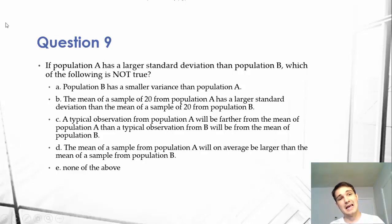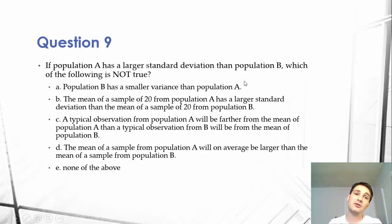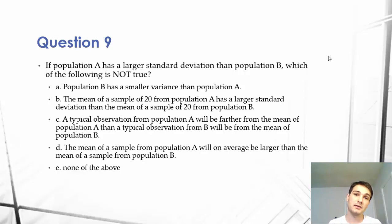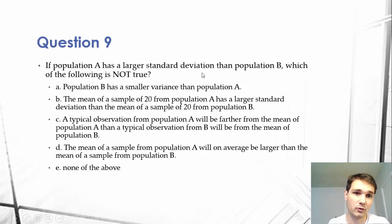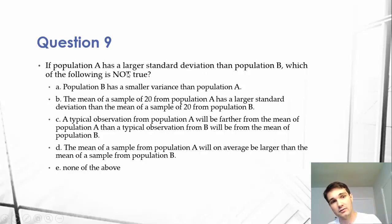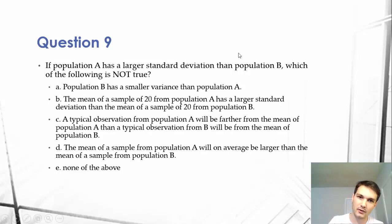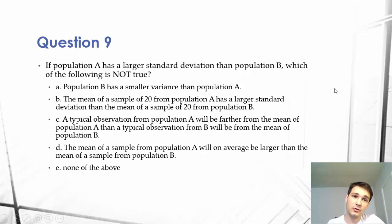We know that A has a larger standard deviation than B. Standard deviation is just the disbursement of a set of data — the larger the standard deviation, the larger the disbursement. It's a measure of variance, so the larger the variance as well. Population B has a smaller variance than population A — this is true because A has a larger standard deviation. Variance can also be measured by standard deviation squared, so if standard deviation is higher, variance will be higher. So A is true, and therefore it is not the answer.